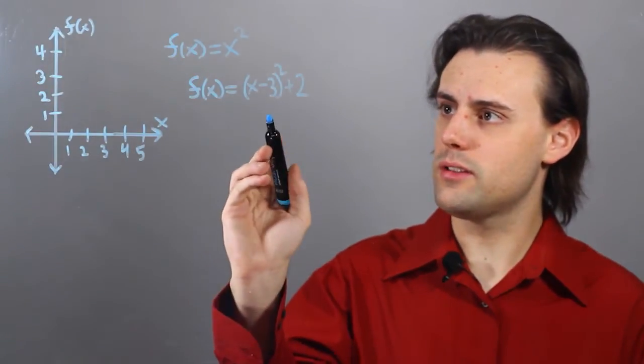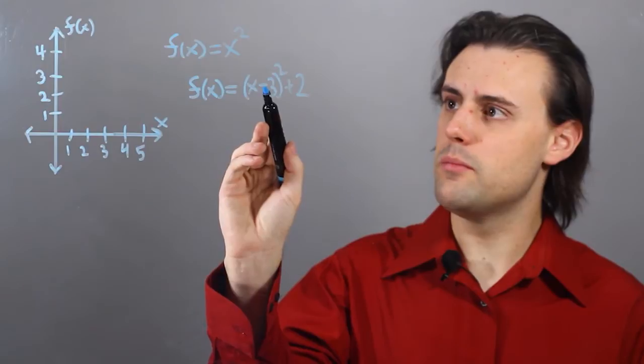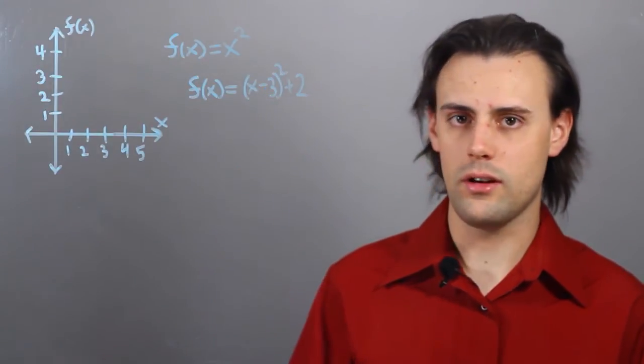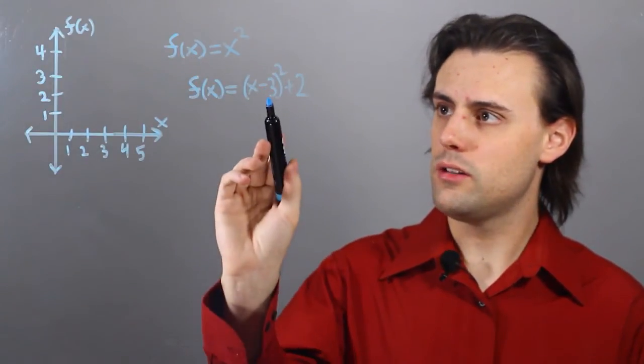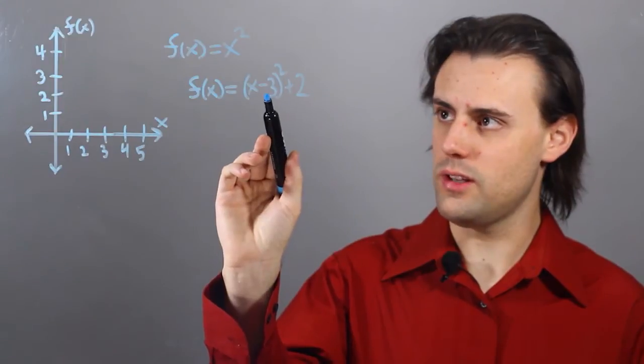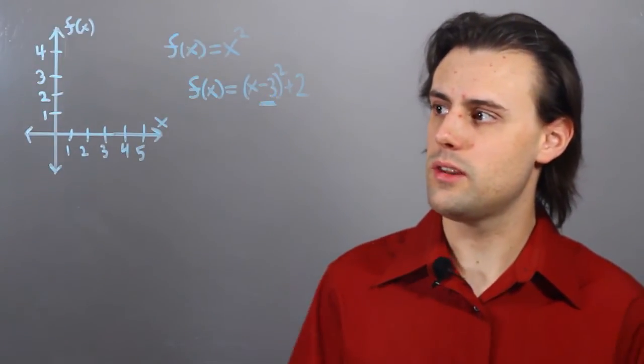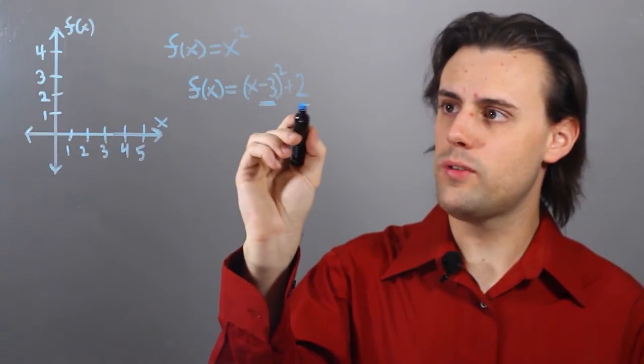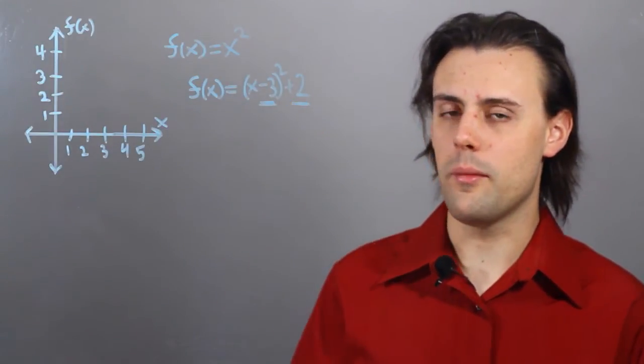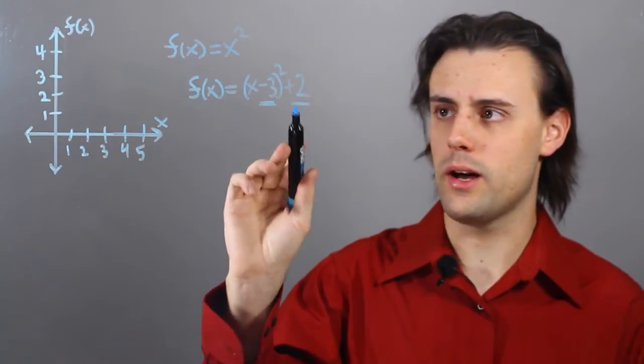So in this example, I'm going to be moving the vertex of the quadratic function to the right of the origin by 3 places in the x direction, and I'm going to be moving that same vertex up in the y direction by 2.